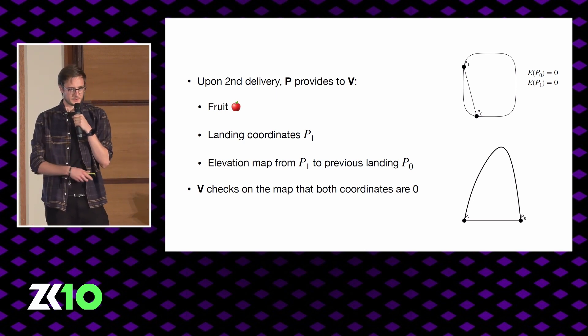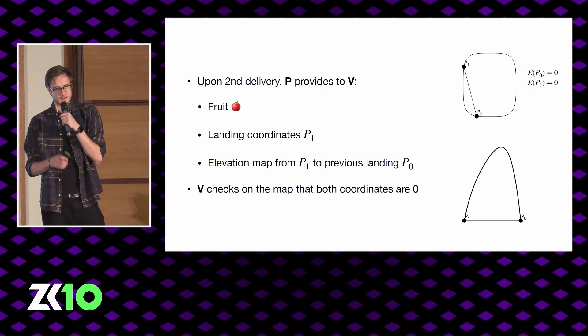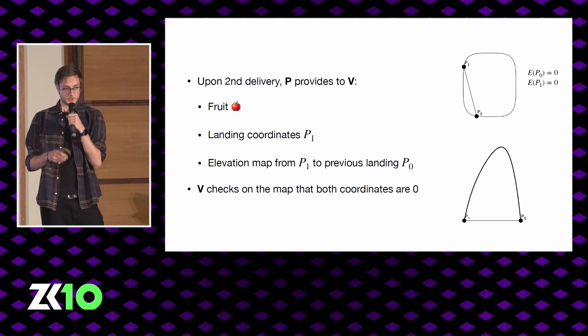Along the way he's going to record the elevation, and when he gets back to mainland, he's going to give the verifier the fruit, the new landing coordinates P1, as well as his elevation map that he created while he was there. Now obviously the verifier doesn't trust anything the prover is giving him, but he can check one thing. He's going to check that on this elevation map, both P1 and P0 are indeed at elevation zero.